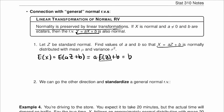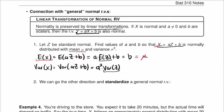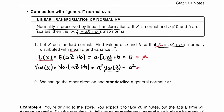We want this expected value to be mu, so b should be equal to mu. Now the variance of x is the variance of a times c plus b, which equals a squared times the variance of c. The variance of a standard normal distribution is one, so this is a squared, and we want this to be sigma squared. So a is equal to sigma and b is equal to mu.